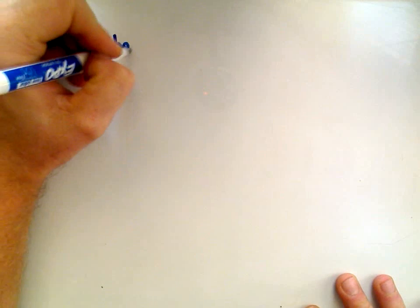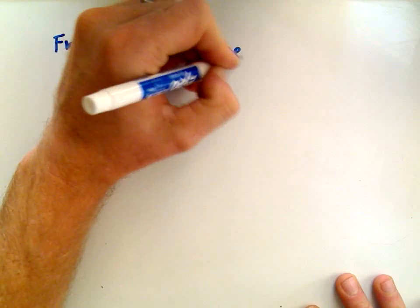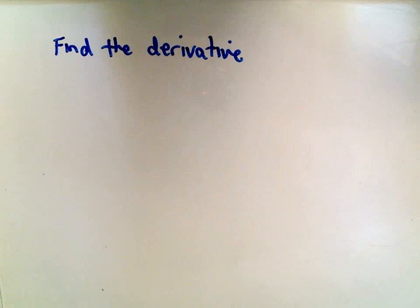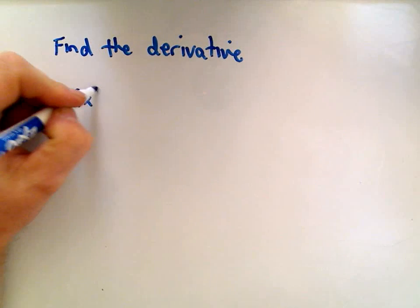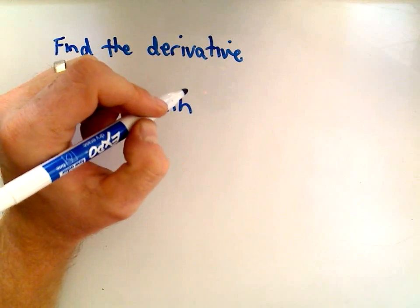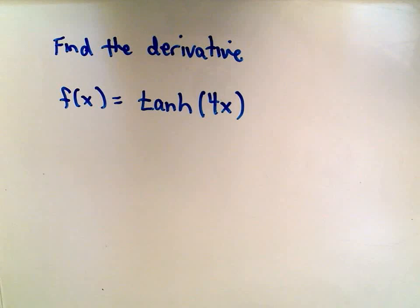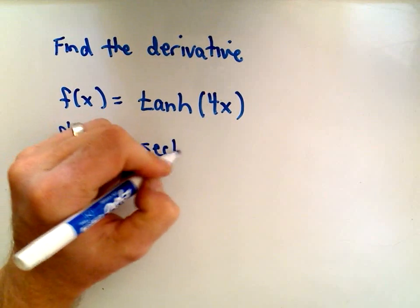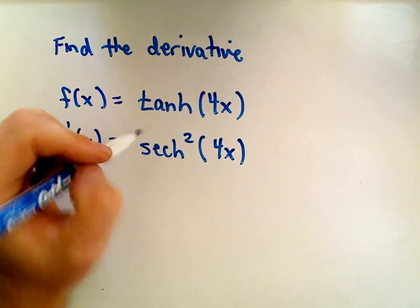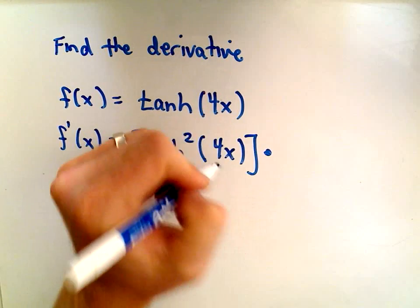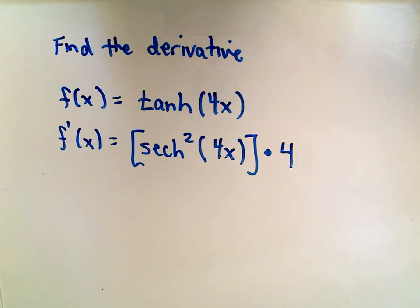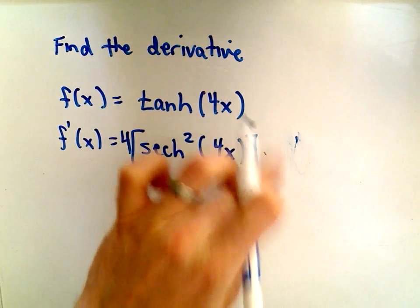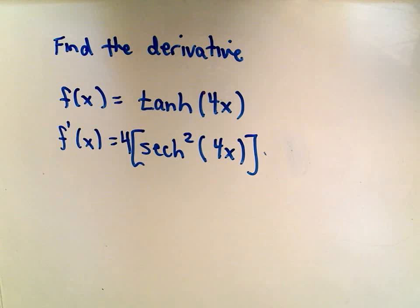Let's do a couple of examples. I'm not going to do any of these from the definition — I'm just going to use my shortcuts. Suppose our function is hyperbolic tangent of 4x. All we have to do here is use the chain rule. The derivative of hyperbolic tangent is hyperbolic secant squared — we leave the inside stuff alone — then we multiply by the derivative of the inside, which is 4. So we simply pull the 4 out front, and we have our derivative.